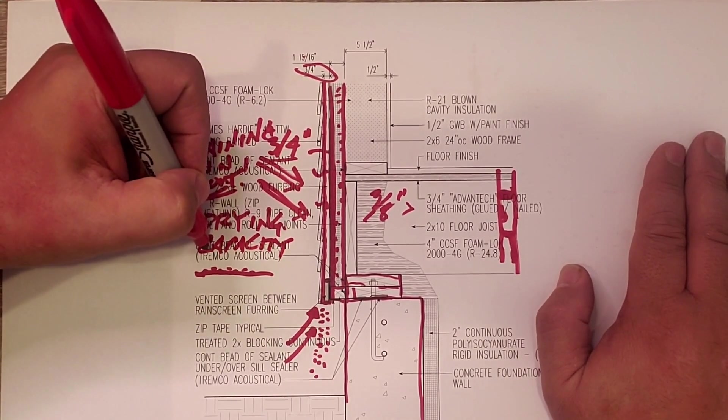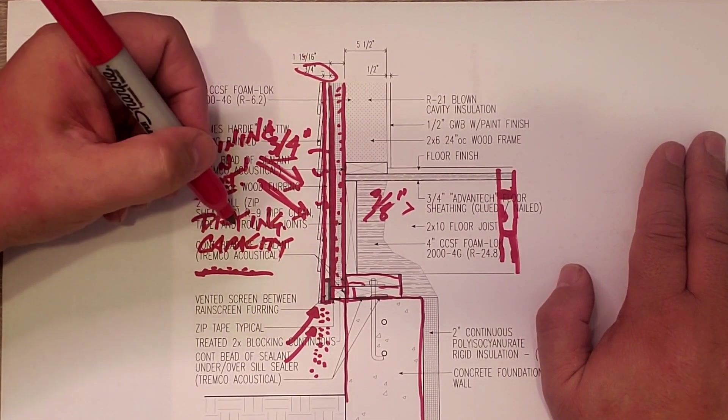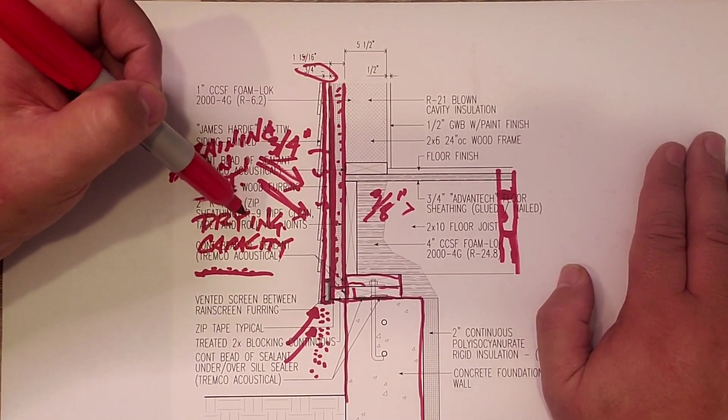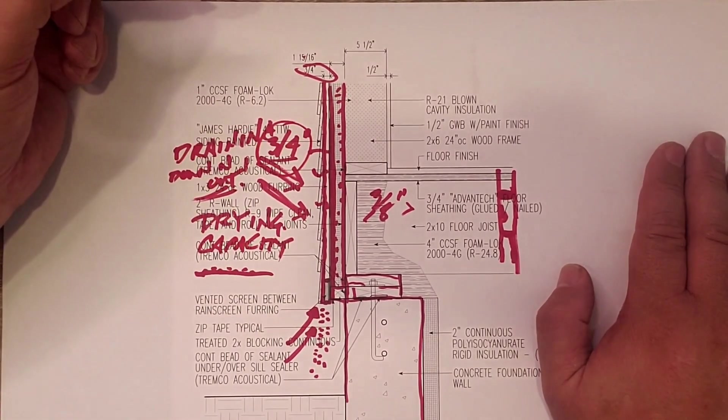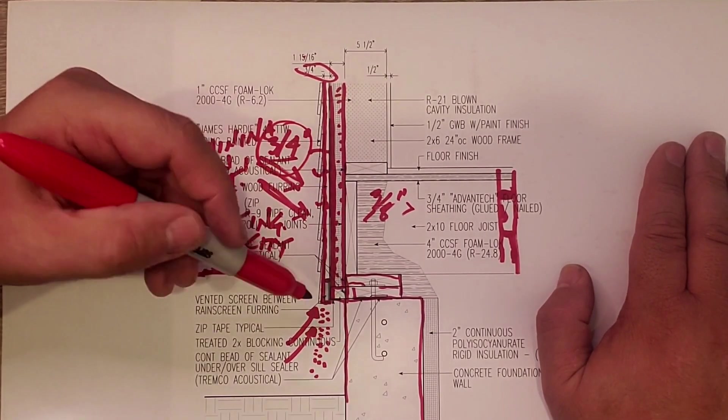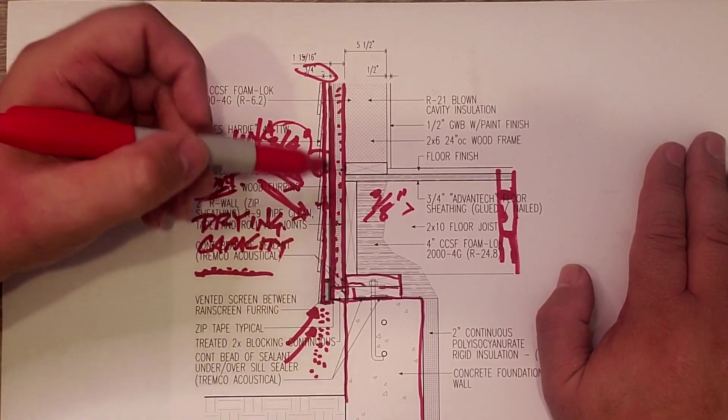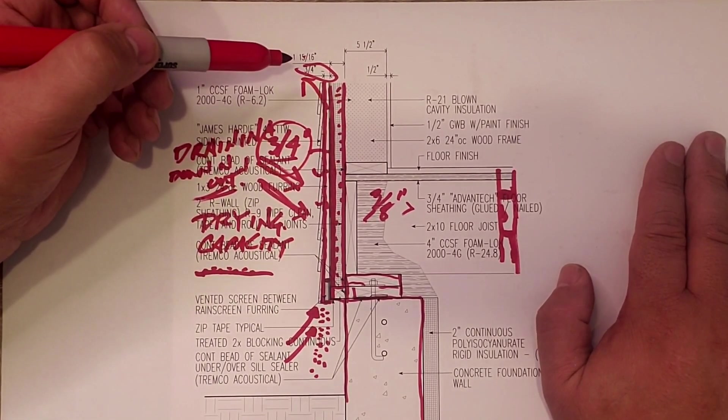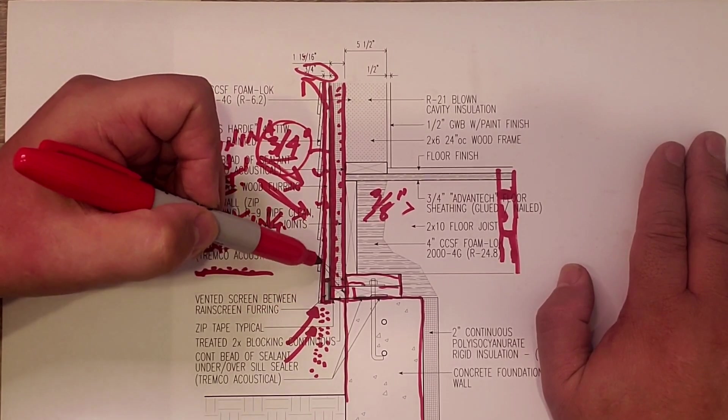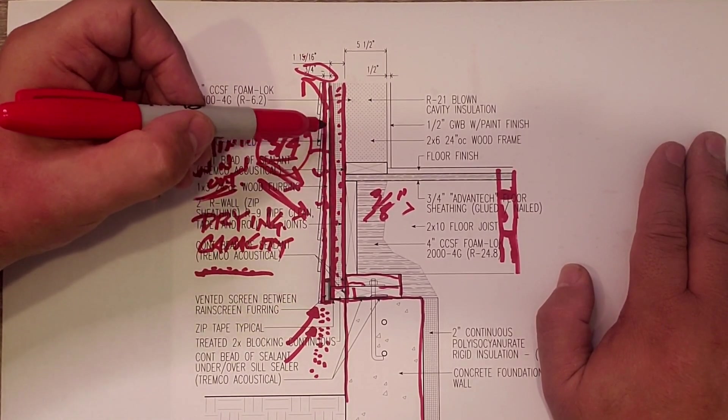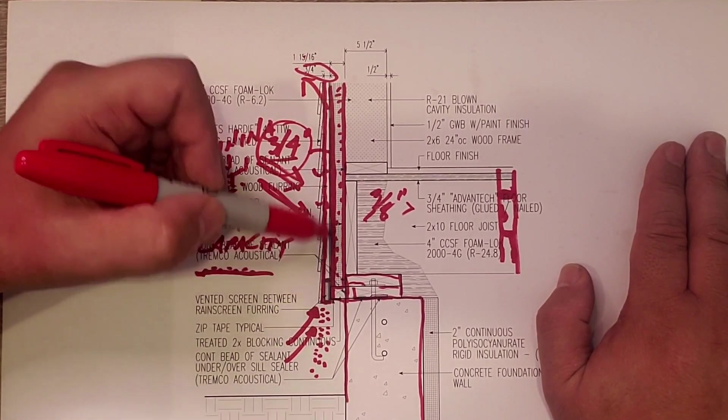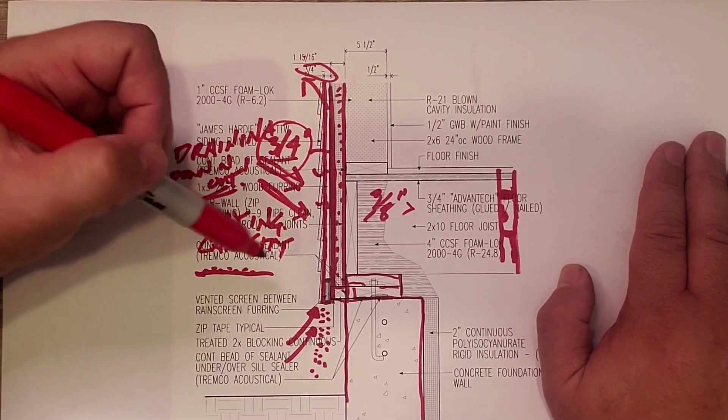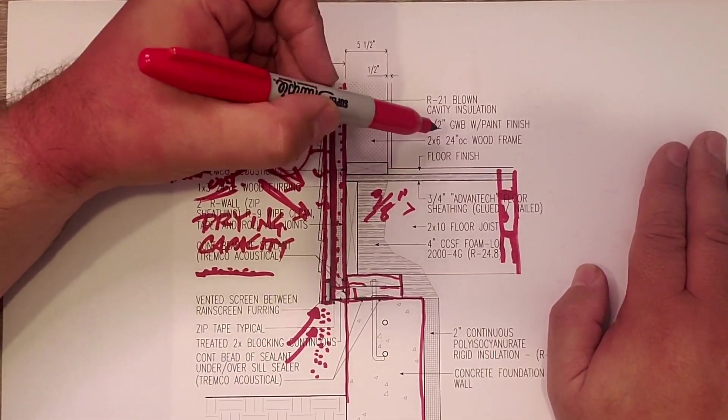I'm sure there's some people out there that will argue it does offer some drying, and it does, but there's no way it offers as much drying as our three-quarter inch space. Having that vented space and then having a relief at the top of the wall allows you to induce some backside ventilation there. The beauty of that backside ventilation...